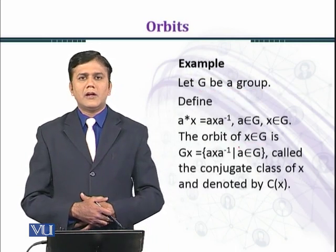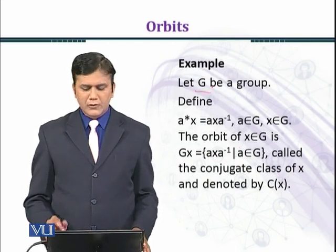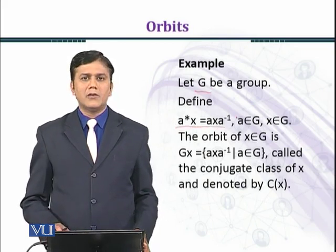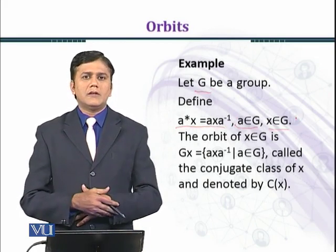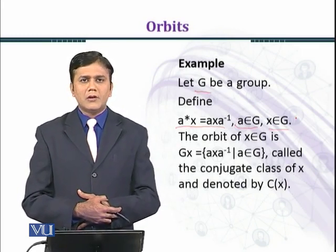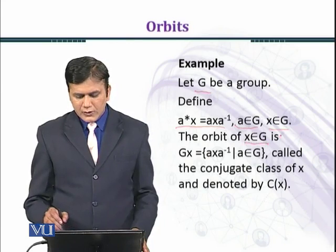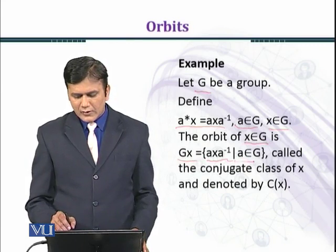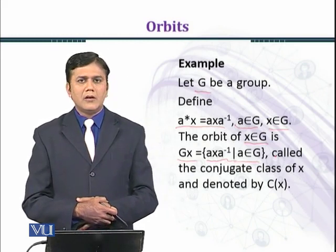Let's consider another example. Let G be a group. We define a ⋆ x equal to a·x·a⁻¹, where a belongs to G and x belongs to G. We have seen this example before — this is conjugation. In this case we want to find the orbit. The orbit of x belonging to G is G·x equal to the set of all a·x·a⁻¹ such that a belongs to G.